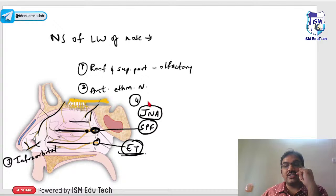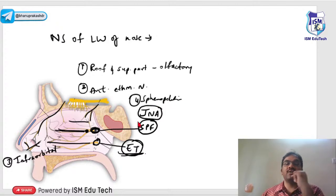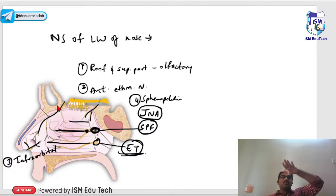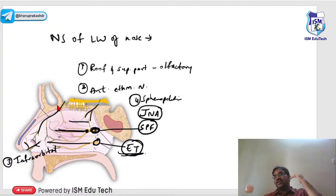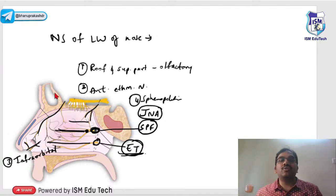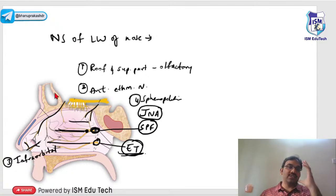The posterior part of the nasal cavity is supplied by the sphenopalatine nerve. To summarize the nerve supply: olfactory from above, anterior ethmoidal, posterior ethmoidal, sphenopalatine, and infra-orbital. No need to memorize — just remember the surrounding structures and the naming follows accordingly.